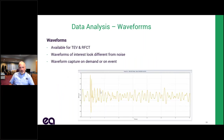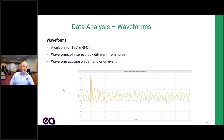We're also going to want to look at waveforms. There are waveforms that look like noise and waveforms that look like TEV. We can generate waveforms for both TEV and the RFCTs, and we can look at those and determine: this is noise, this is PD.